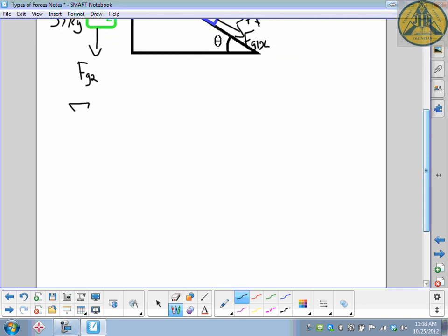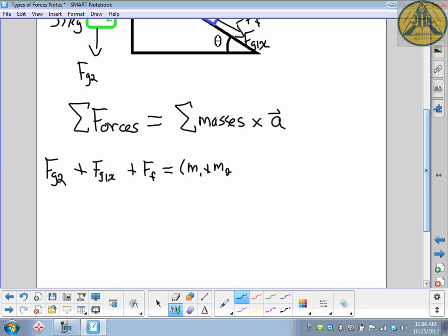So the equation that governs this problem is really Newton's second law written down by its concept definition. Sum of all the forces, the net force, is equal to the sum of all the masses times the acceleration that they move. And now our forces in play, going from left to right, we have force of gravity 2 added to the force of gravity of the first mass in the X direction, plus the force of friction.